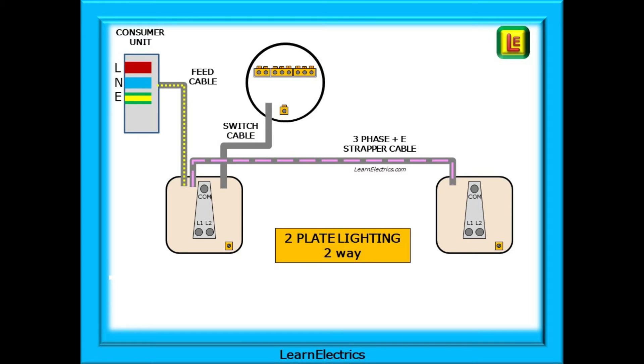To make a two-plate two-way lighting circuit we will need a feed cable or permanent live into the switch marked here with yellow dots. We will have a switch cable to the ceiling rows shown in plain grey and we need a three-phase plus earth strapper cable from the first switch to the second. This is shown on the drawings as grey with purple dashes.